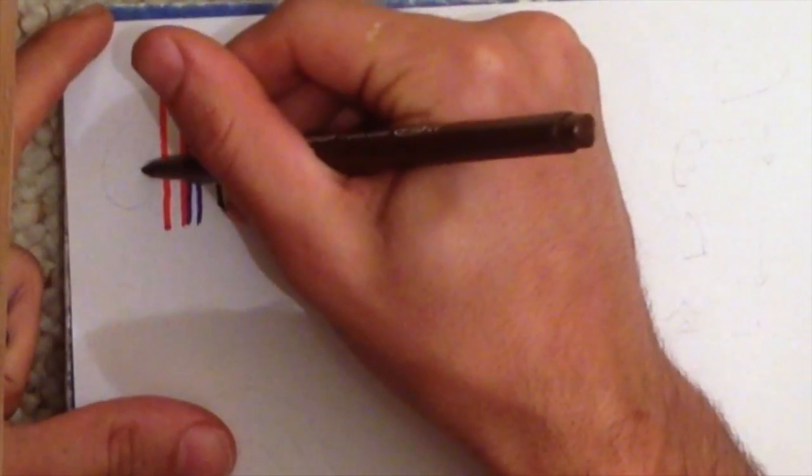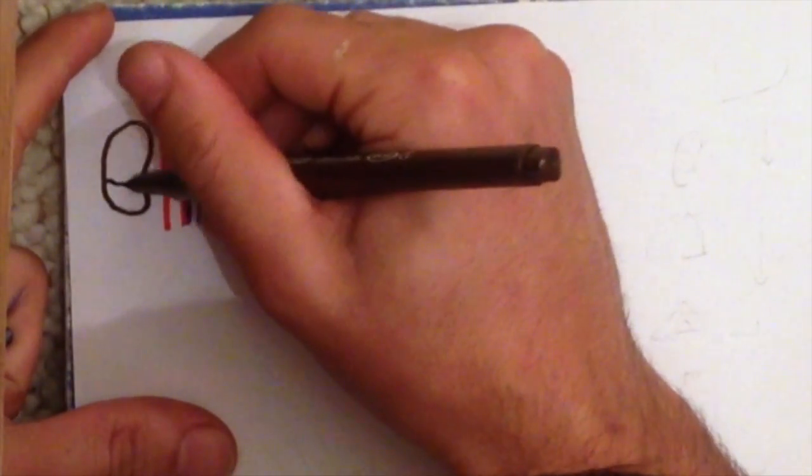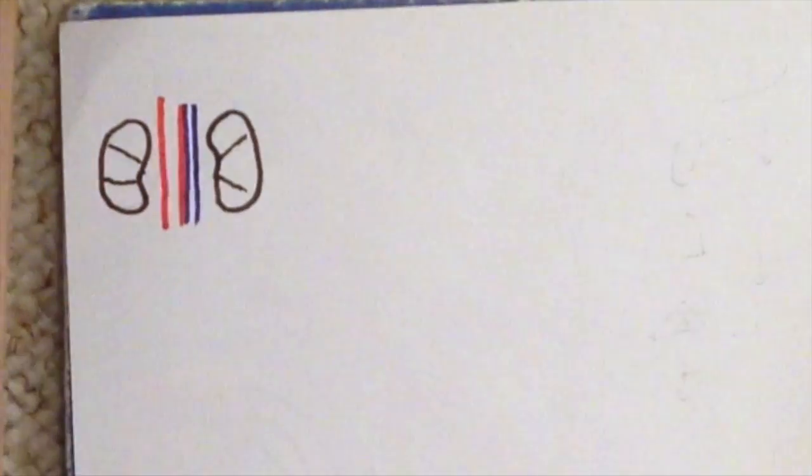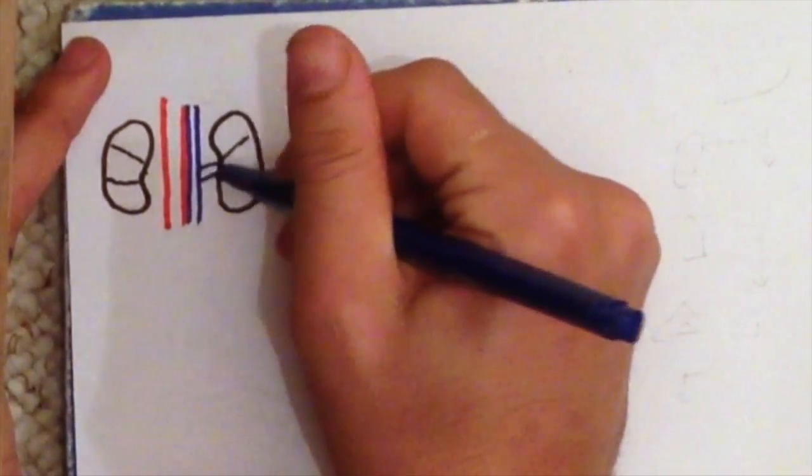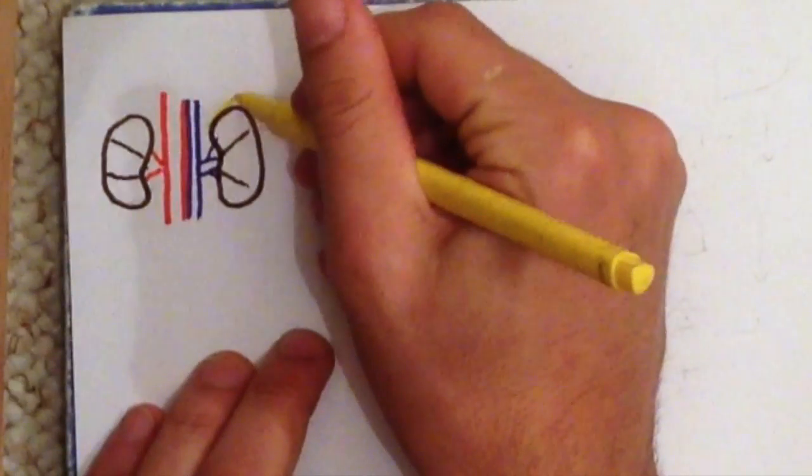So let's start off with the location of the adrenal glands. Well, as the name says, they sit above the kidneys - adrenal - so that's a really easy way to remember where they are located. The left kidney is slightly higher than the right kidney, and this is due to the presence of the liver on the right-hand side of the body.